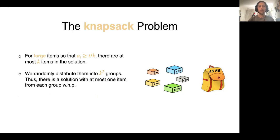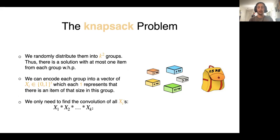To solve the case with large items, we randomly distribute them into K² groups. We can infer that there is at most one item of solution in each group with high probability. Then we encode each group into a vector, which for any item in that group, there is a 1 in the size of that item and zero everywhere else. What we need to do for large items is to just find the convolution of all of these X_i's.